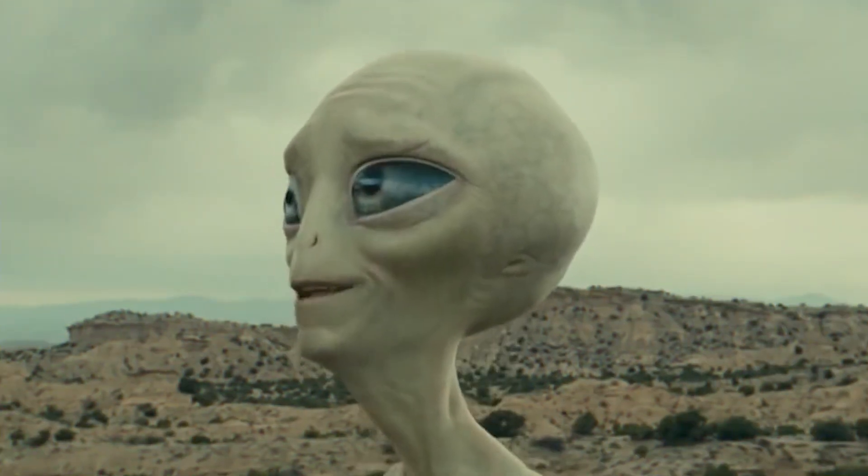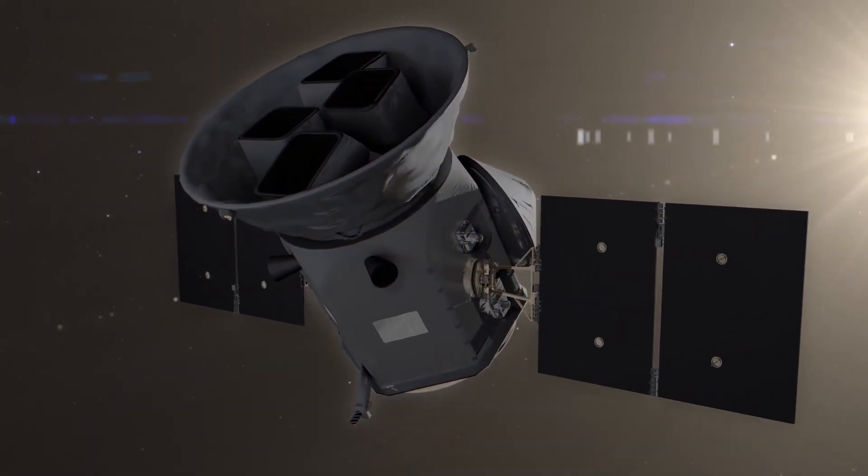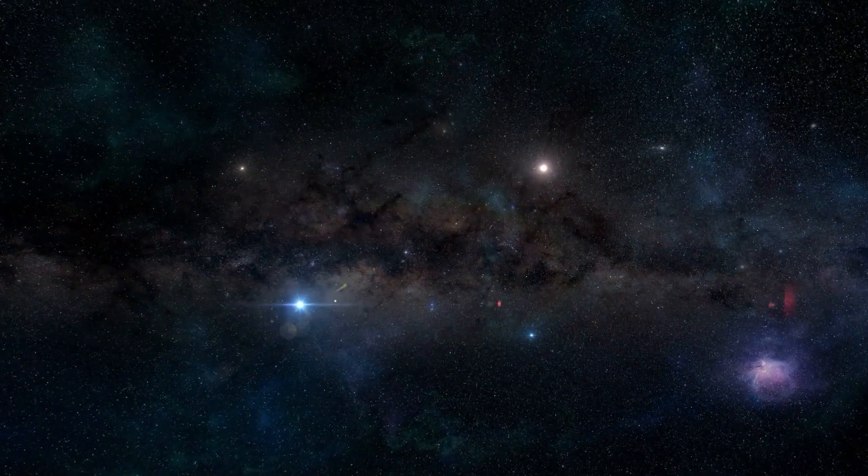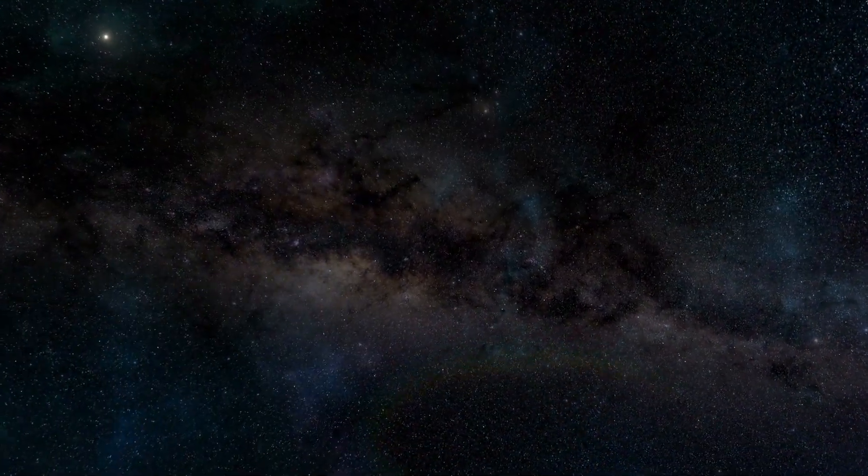There are a number of indicators that alien technology exists on another world. For example, the transit of a vast constellation of satellites in the direction we're heading may allow us to see the light from a faraway globe flicker.